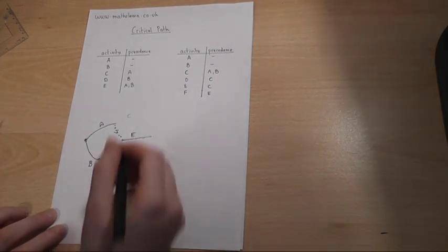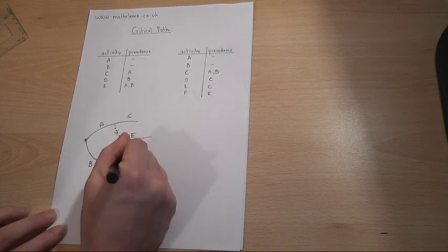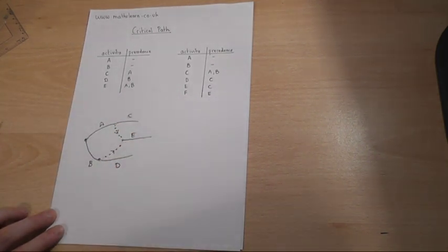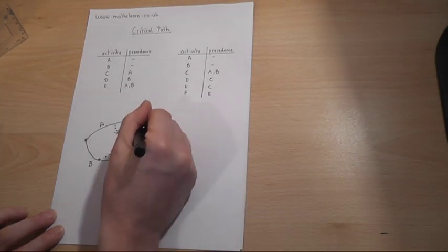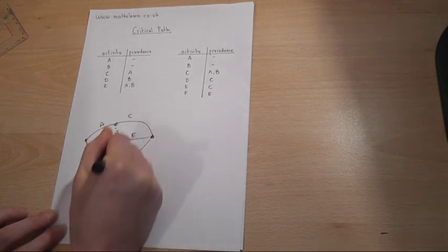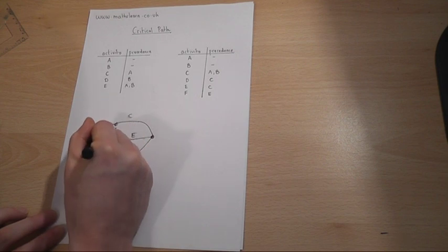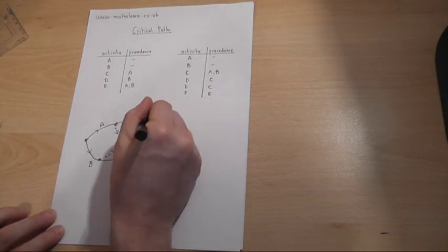Then we have C and D coming out like so, and we finish off the entire network at one point so we extend C down and we extend D up like so, and that is the first critical path network.